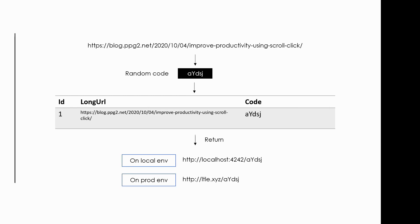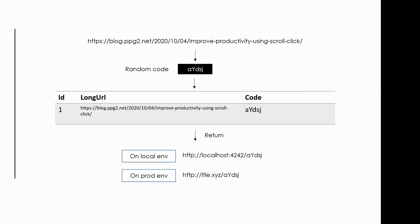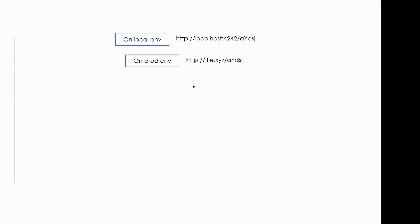The short URL on the development environment will look like localhost:port-number/random-generated-code, whereas on the production environment it will look like ltle.xyz/random-generated-code. I have purchased the ltle.xyz domain for the production environment.